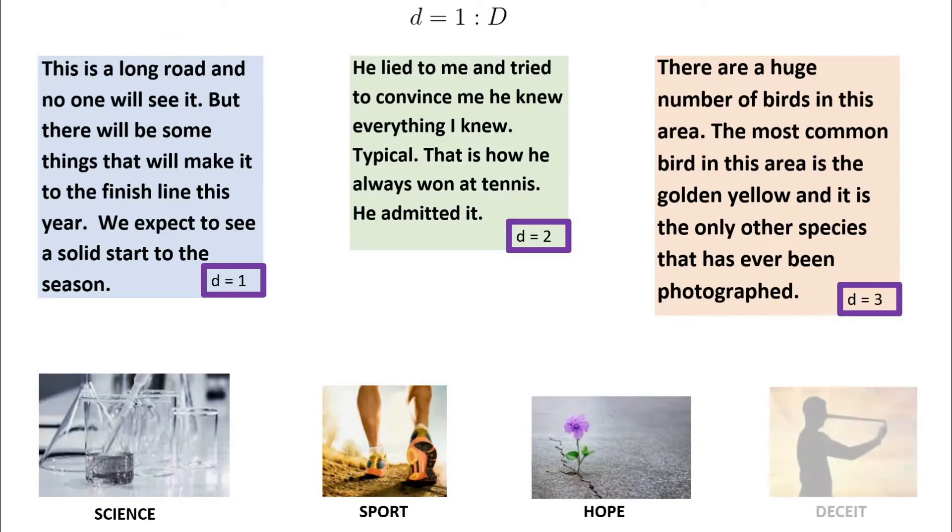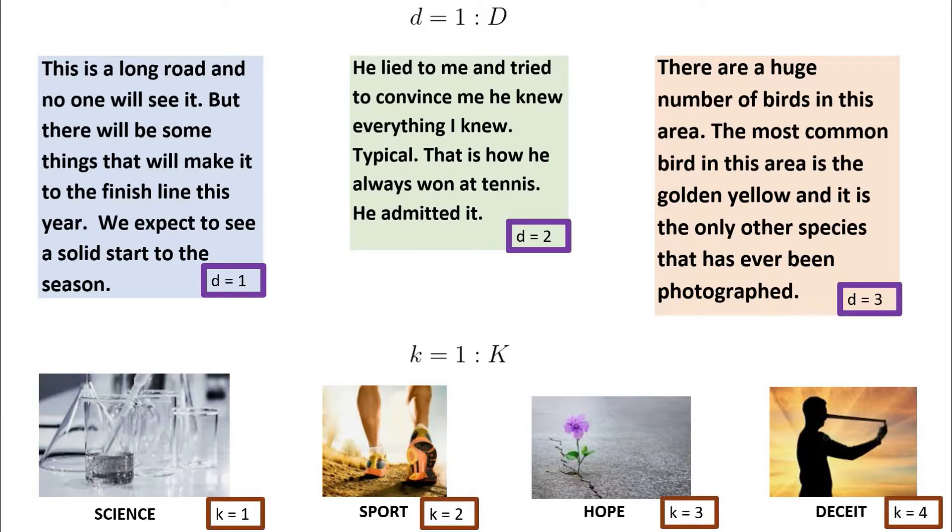and deceit. Again in a more general mathematical notation, we can say we have capital K number of different topics and we can use lowercase k to indicate each specific topic.